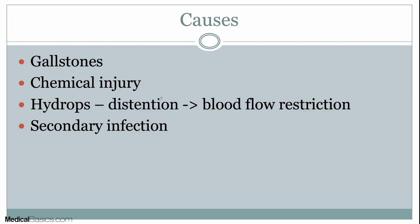There are many different causes of acute cholecystitis, with gallstones being the number one cause by far. You can also have chemical injury from bile salts or inflammation, hydrops — which is essentially distention that leads to diminished blood flow and eventually ischemia of the gallbladder — and it can also be secondary to infection.